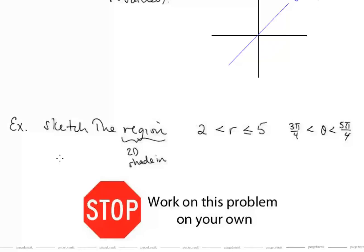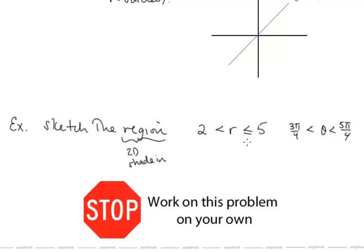Now I'd like you to sketch the region in the plane where r is greater than 2 and less than or equal to 5, and theta is greater than 3π/4 and less than 5π/4. Start by graphing r equals 2, r equals 5, theta equals 3π/4, theta equals 5π/4, and then figure out what region this is describing. Please pause the video and work on that.